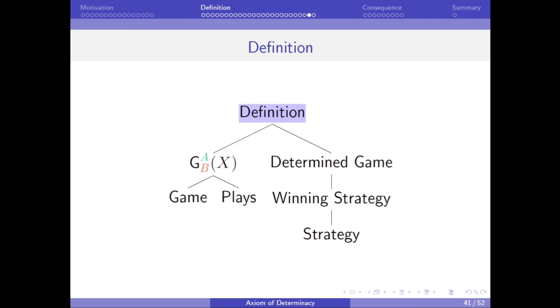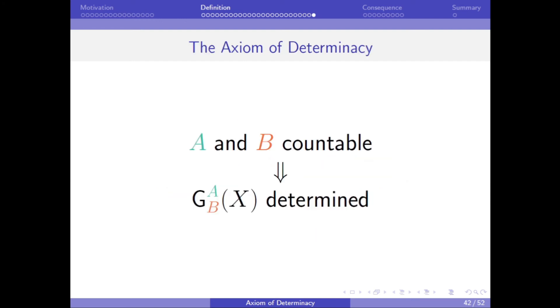So now, we can define the axiom of determinacy, which is the assumption that if A and B are countable sets, then every game using those moves is determined, regardless of the set X.